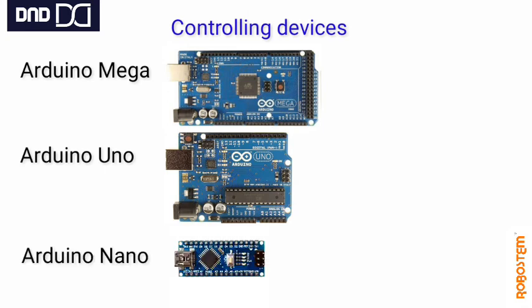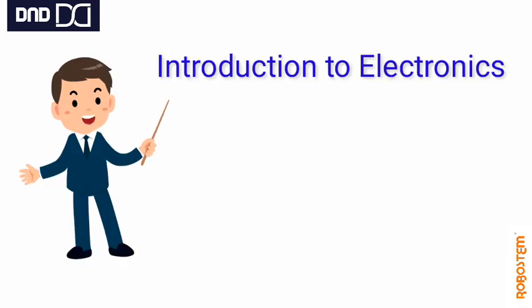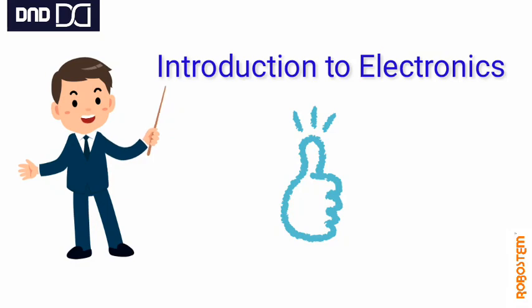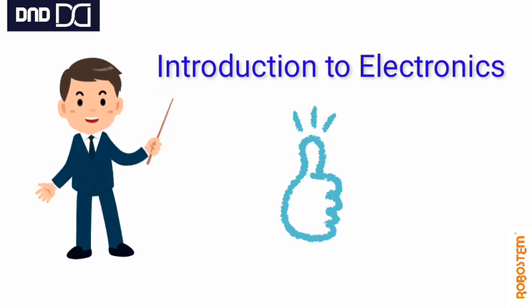The controlling devices are Arduino Mega and Arduino Uno. Raspberry Pi is an advanced platform used for advanced projects. This has been the introduction to electronics covering all components. Separate videos will be provided for each component with images.